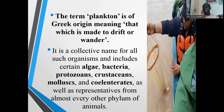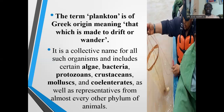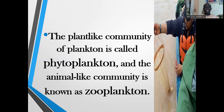Plankton includes representatives from almost every other animal phylum. Some organisms are minute — sometimes the larvae of organisms that are very small — and are seen drifting on the water surface. When they become adults, they either become nektons or benthos. The plant-like community of plankton is called phytoplankton, and the animal-like community is called zooplankton.